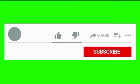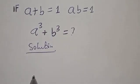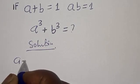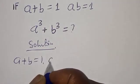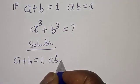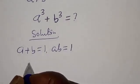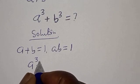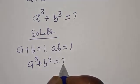Please don't forget to like, share, comment, and subscribe. Thank you. Solution: we have a plus b is equal to 1, ab is equal to 1, and a cubed plus b cubed is unknown.